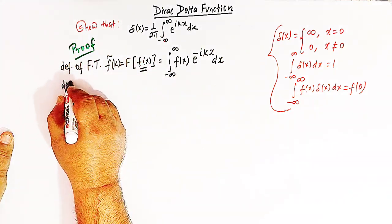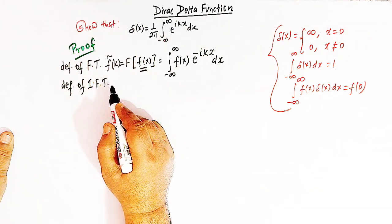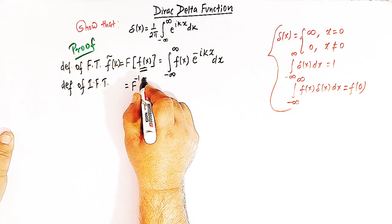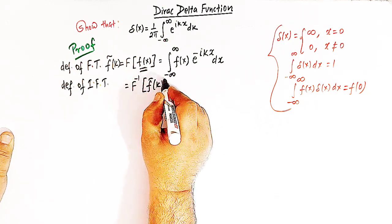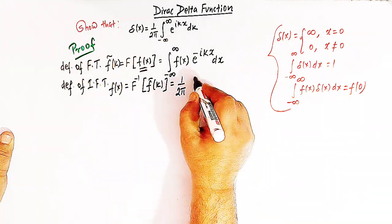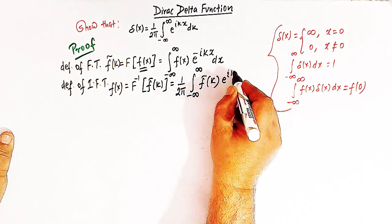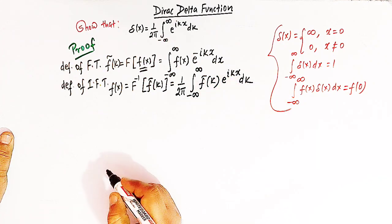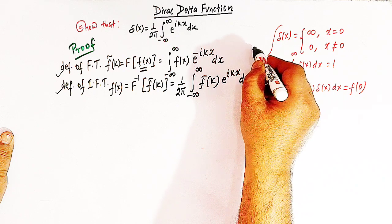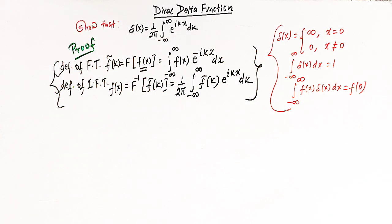Now let us define the inverse Fourier transform of f of x. The inverse Fourier transform is denoted by F inverse of f of k, and f of x equals 1 over 2 pi times the integral from minus infinity to infinity of f of k, e raised to ikx, dk. We'll make use of these two definitions to arrive at this representation of the direct delta function.